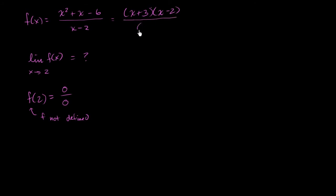all of that over x minus 2. So as long as x does not equal 2, these two things will cancel out. So we could say this is equal to x plus 3 for all x's except for x is equal to 2. As long as x does not equal 2. So that's another way of looking at it.